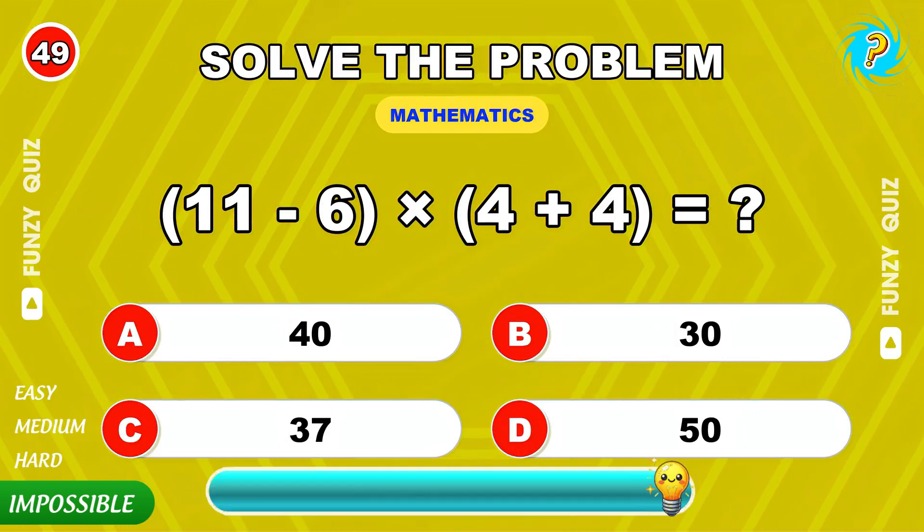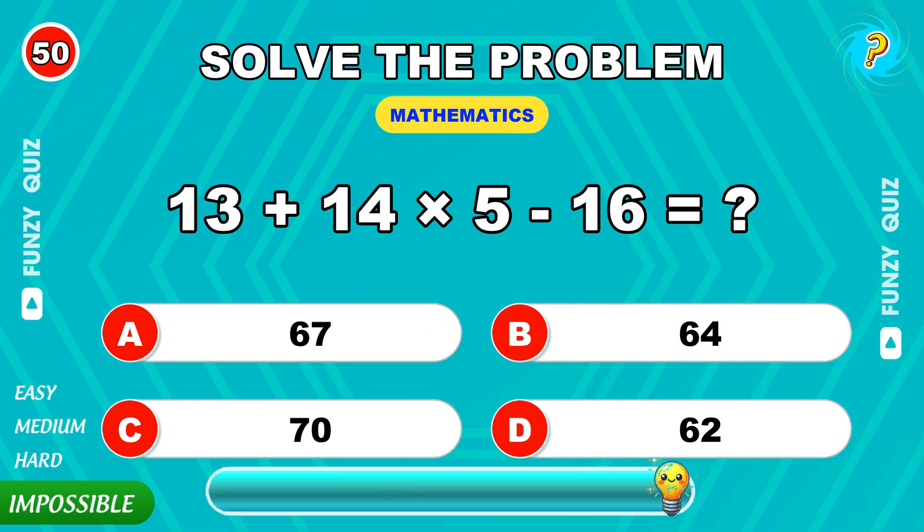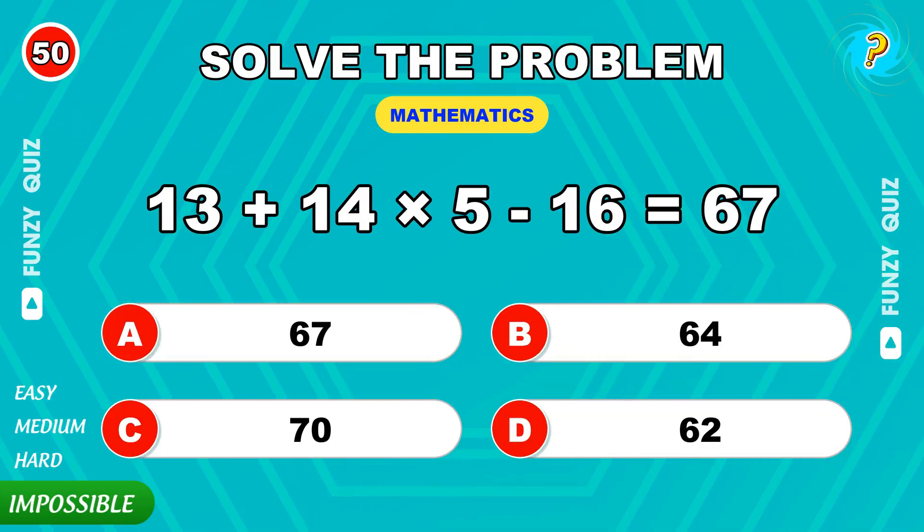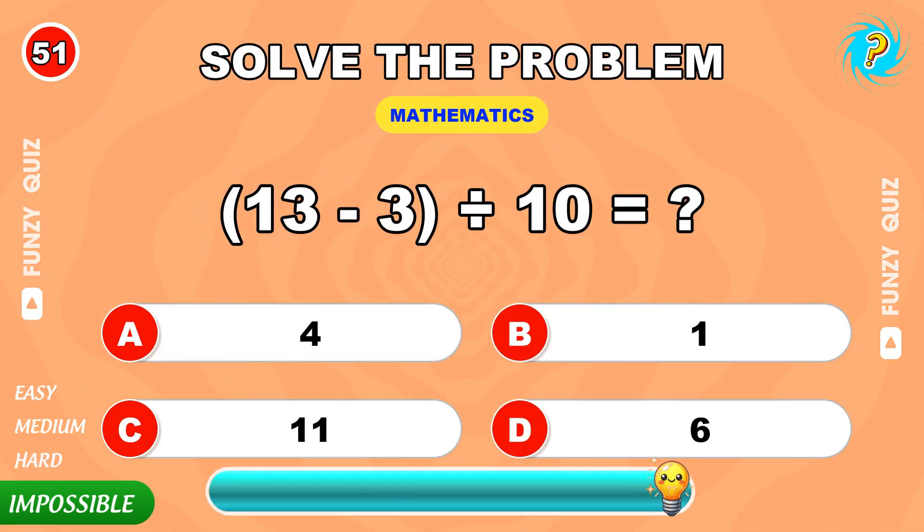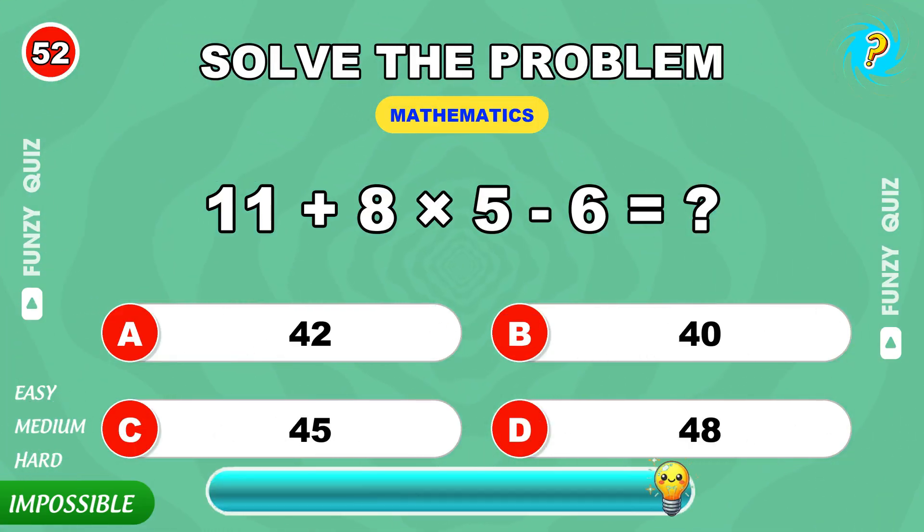11 minus 6 times 4 plus 4. 40. 13 plus 14 times 5 minus 16. 67. 13 minus 3 divided by 10. 1. 11 plus 8 times 5 minus 6. 45.